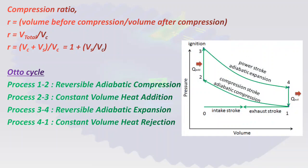Now, the Otto cycle. It consists of four processes: Process 1 to 2 is reversible adiabatic compression, also called reversible isentropic compression, where entropy is constant. Process 2 to 3 is constant volume heat addition. Process 3 to 4 is reversible adiabatic expansion. Process 4 to 1 is constant volume heat rejection. Heat addition and heat rejection do not actually take place at constant volume — I will discuss about this in further slides.